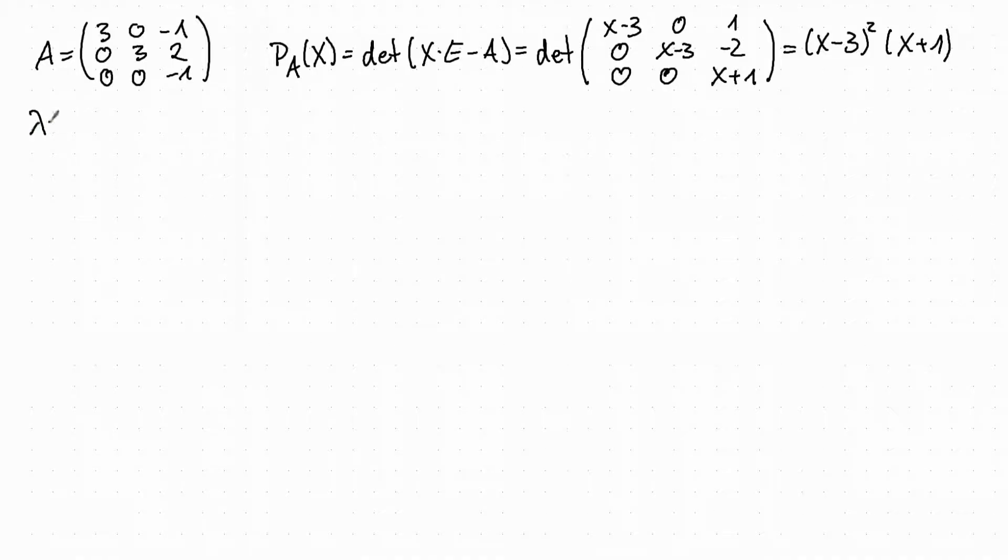We now have to compute the eigenvectors for both eigenvalues and we start with the eigenvalue minus 1. So lambda equals minus 1. This gives us the following condition: 3, 0, minus 1, 0, 3, 2, 0, 0, minus 1 times v.